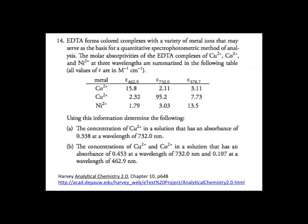For part B, we are interested in the concentrations of copper and cobalt in one solution. We're given the total absorbance at two different wavelengths: 732 nanometers and 462.9 nanometers. So we're going to have to set this up as a system of two equations.